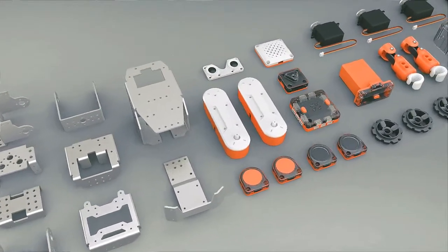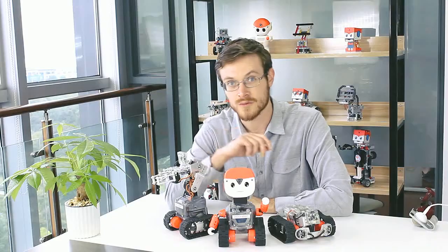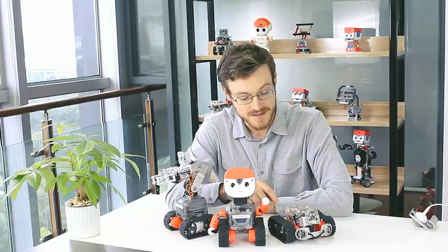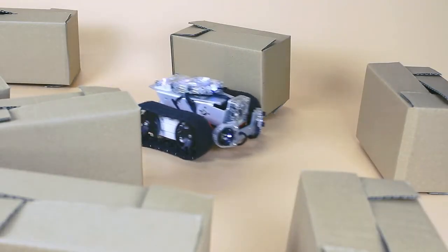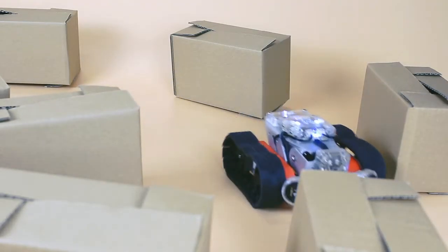You can use the Moonbot kit to create the three official robot forms. Now first is the Moon Rover. This is an autonomous moving platform that's great for transport.